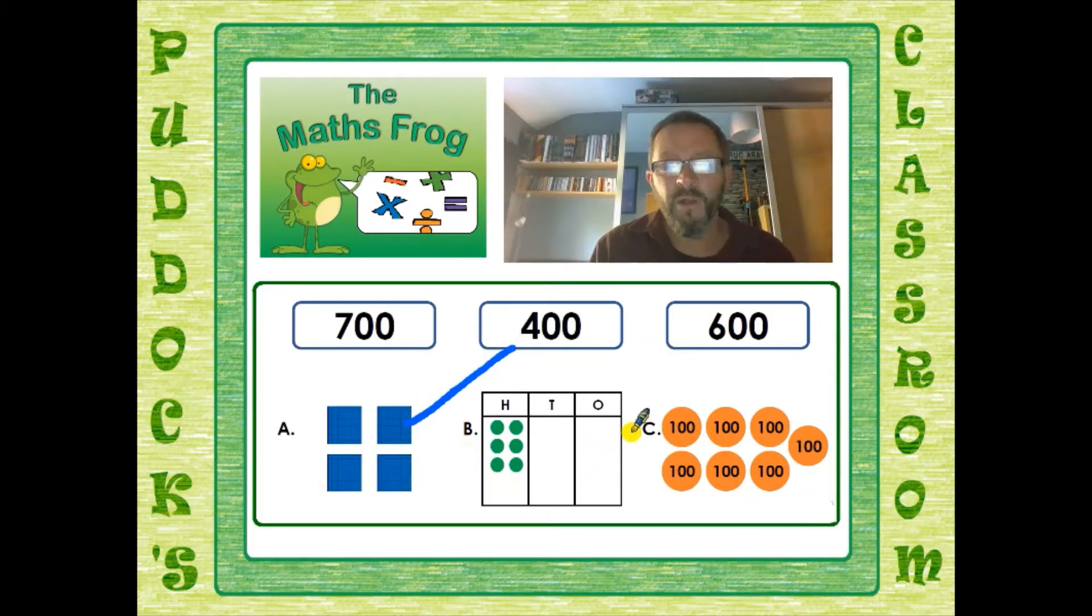In our middle picture we have our hundreds column, our tens column and our ones column. We don't have anything in either the ones column or the tens column but we have six counters in our hundreds column: one, two, three, four, five, six. And because they are hundreds we can count in hundreds: 100, 200, 300, 400, 500, 600. So we have 600 here and look there's our 600. So I can draw a line to match those two values.